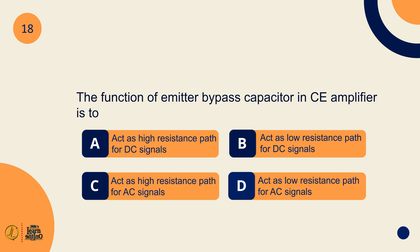The function of emitter bypass capacitor in common emitter amplifier is to act as low resistance path for AC signals.